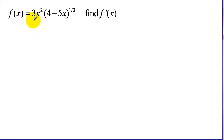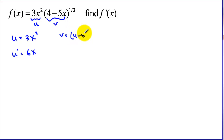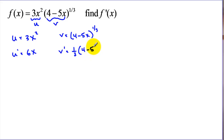On the product rule we take one expression and call it u, and the second expression v. For both u and v we need to find the derivative of each of those parts. We need to find u prime using our power rule. And for v we're going to be using our chain rule or generalized power rule to find its derivative. So for v prime it's going to be one third times our expression in the parentheses, subtract one from the exponent, and then multiply by the derivative of what's inside, which would be negative five.